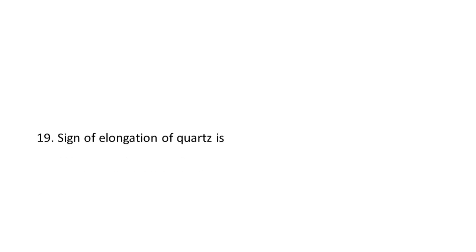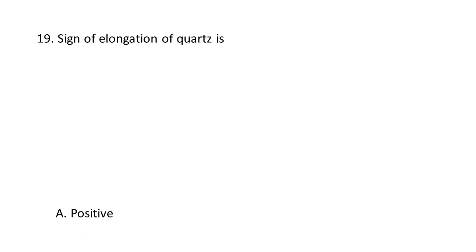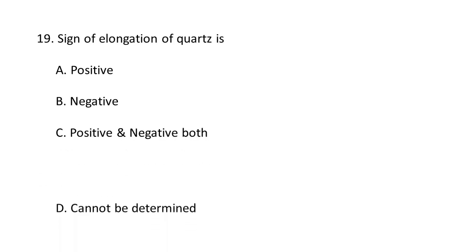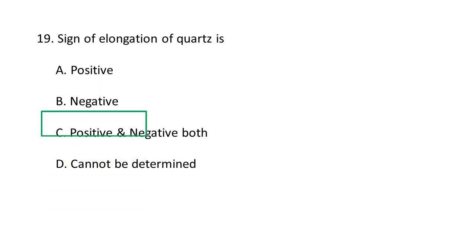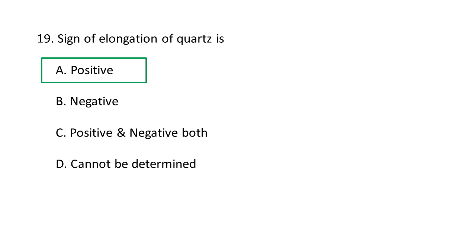Next question: Sign of elongation of quartz is — A. positive, B. negative, C. positive and negative, D. it cannot be determined. Sign of elongation of quartz is positive, meaning it is length-slow. This means the slow component of quartz vibrates in the direction of the crystal's longest length. A is the correct option.